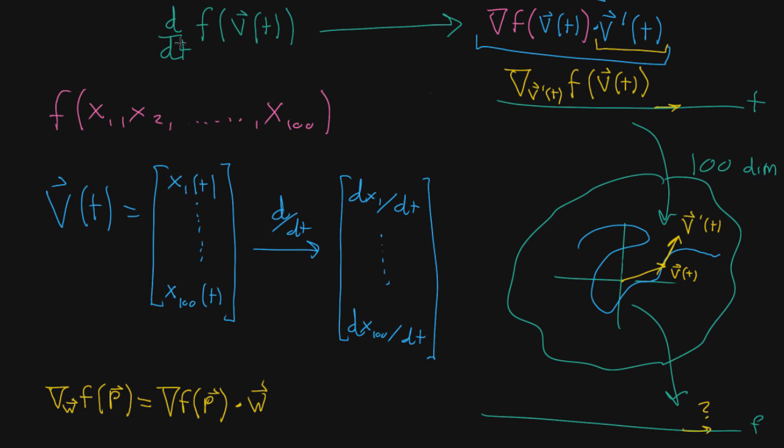Well, remember what we're asking when we say d dt of this composition, is we're saying we take a tiny nudge to t, so that tiny change here in the value t, and we're wondering what change that results in after the composition. Well, at a given point, that tiny nudge in t causes a change in the direction of v prime of t. That's kind of the whole meaning of this vector value derivative.